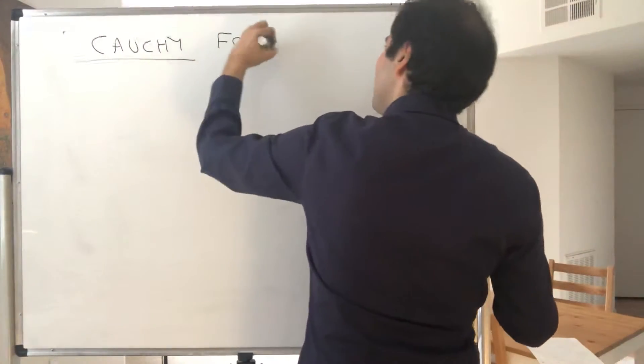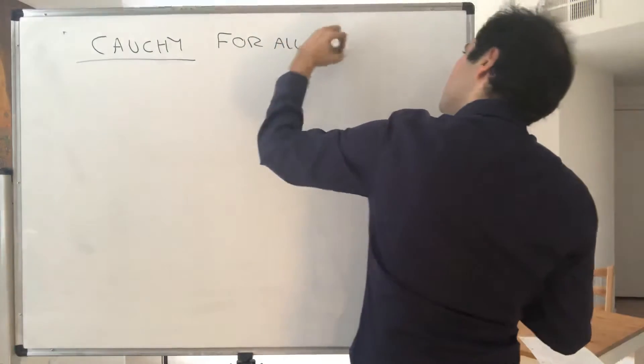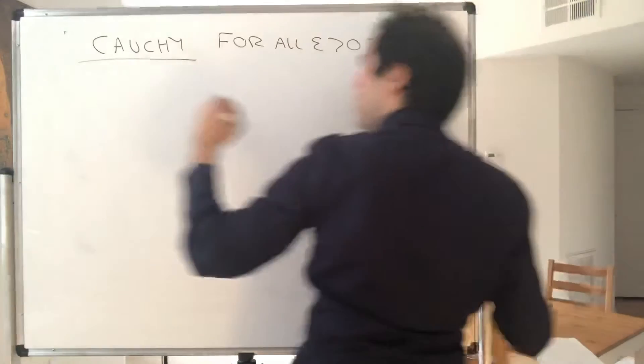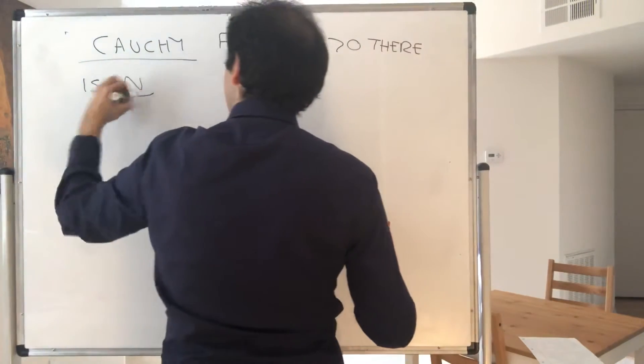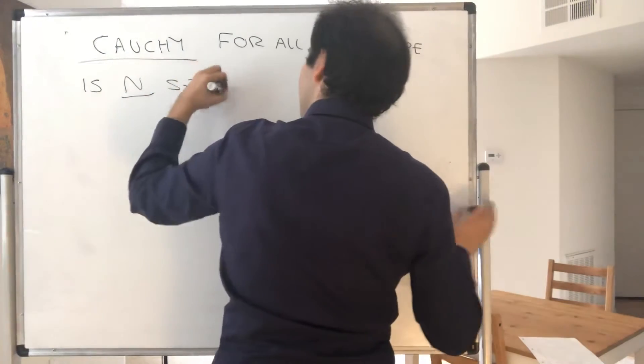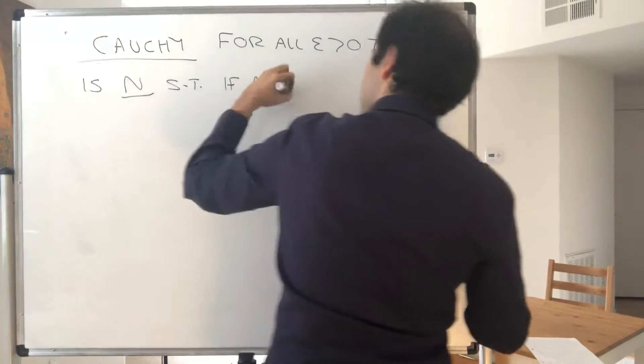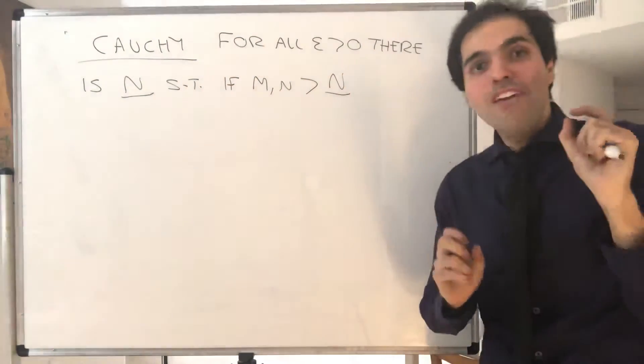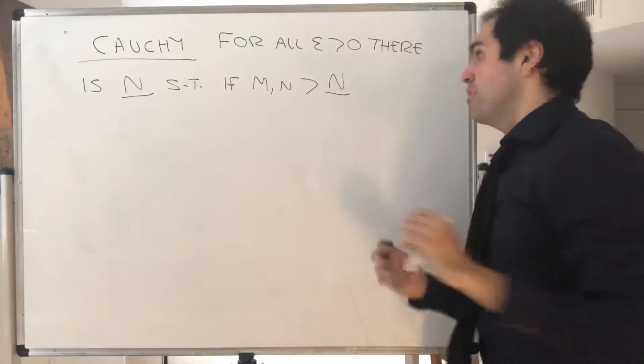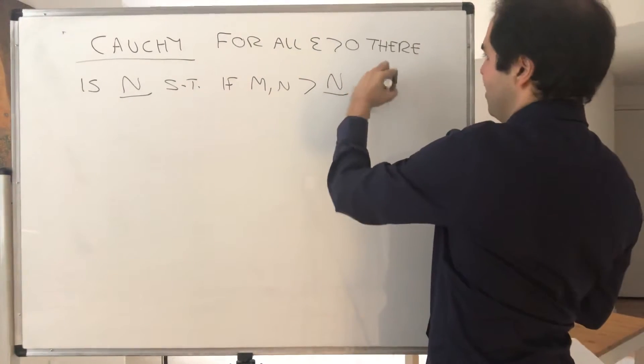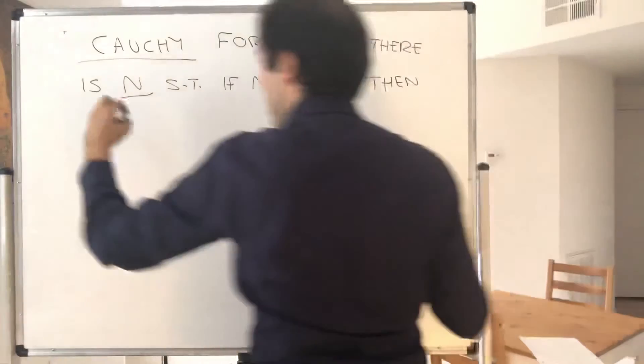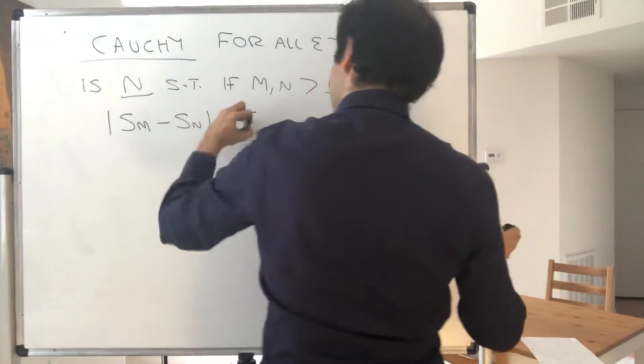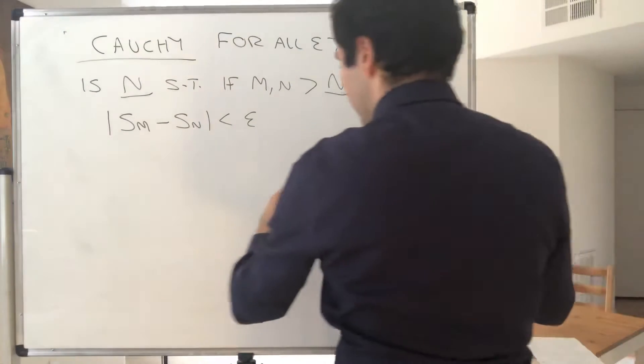So for all epsilon there is a threshold, so no matter how small the error there is some threshold capital N such that after this threshold the values of the sequence are eventually close to each other. Then Sm minus Sn is less than epsilon.